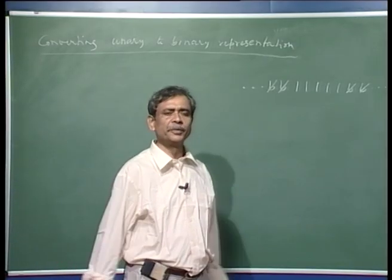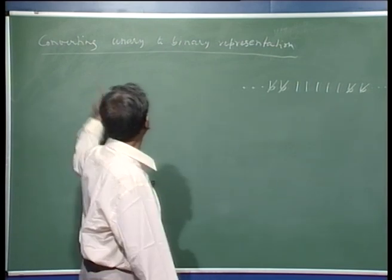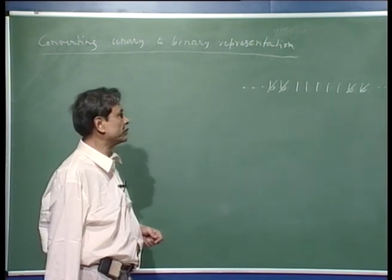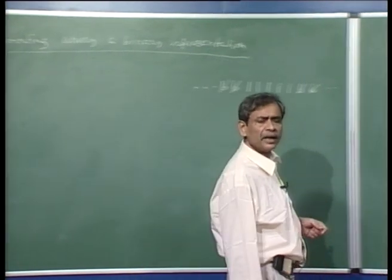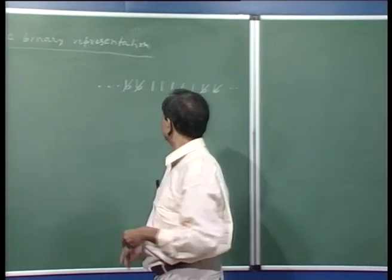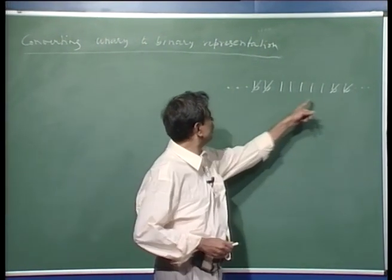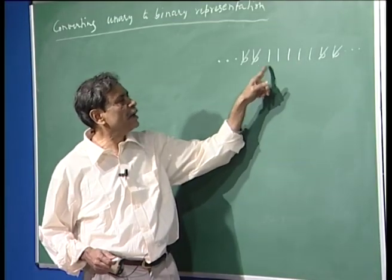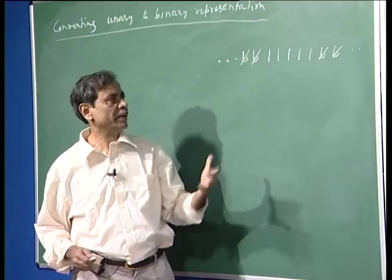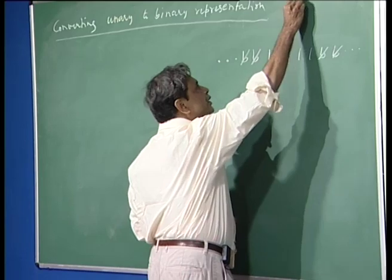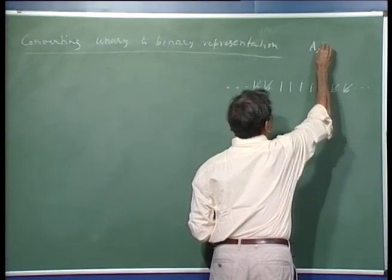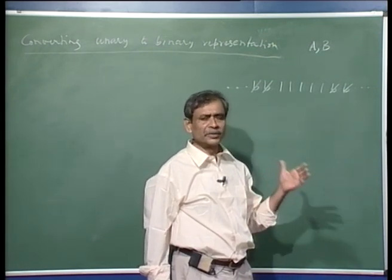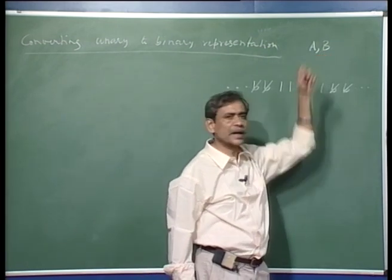Let us now describe the Turing machine which will perform this conversion of a unary representation of a number to its binary representation according to the strategy which we had outlined. As an example, think of this string of 1's which is 5 in unary and we would like to convert it to binary. Remember that we will use for binary representation the symbols a and b, where a would stand for 0 of the normal binary representation and b will stand for 1.